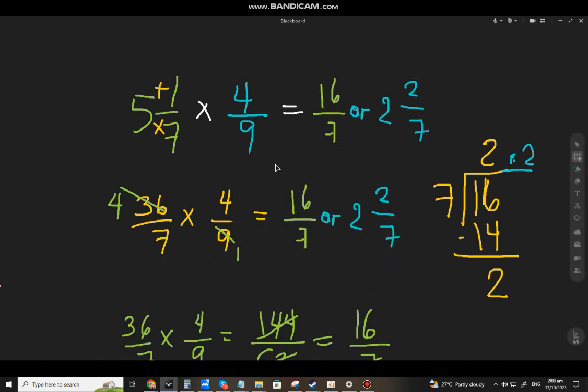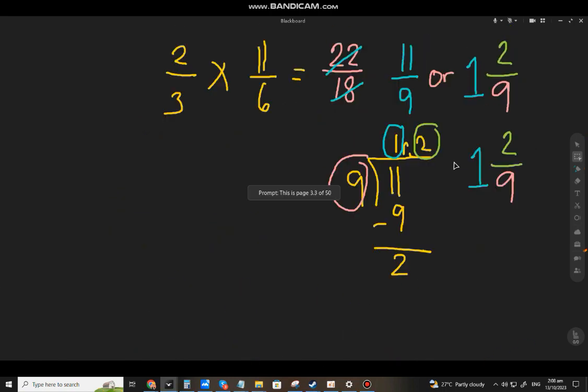So, dun sa tanong na 5 and 1/7 times 4 over 9, ang sagot ay 16 over 7, or 2 and 2/7.